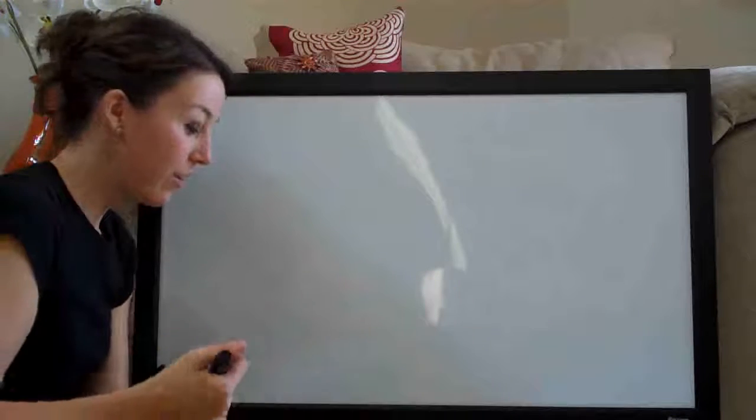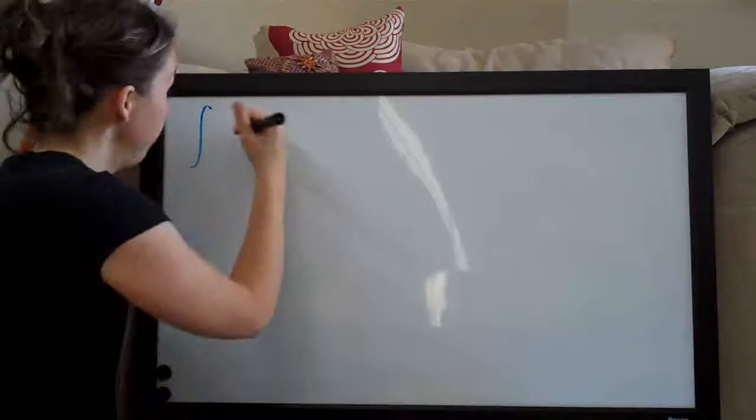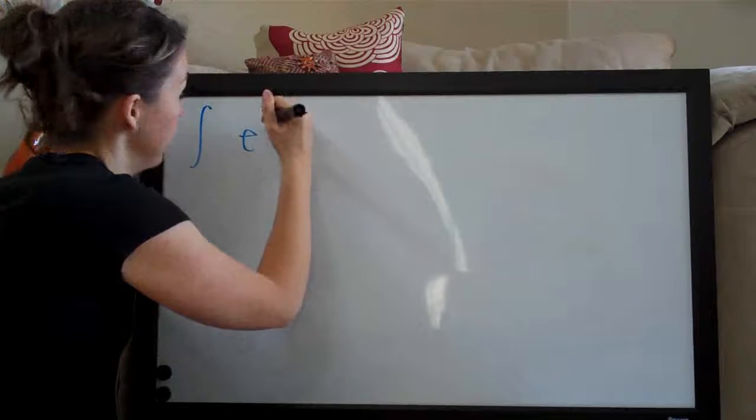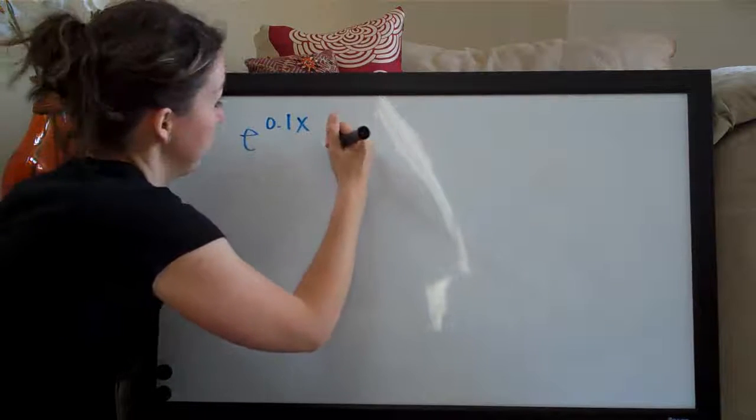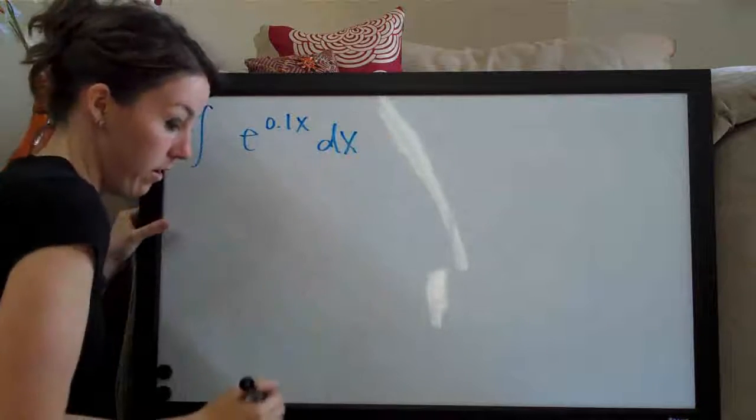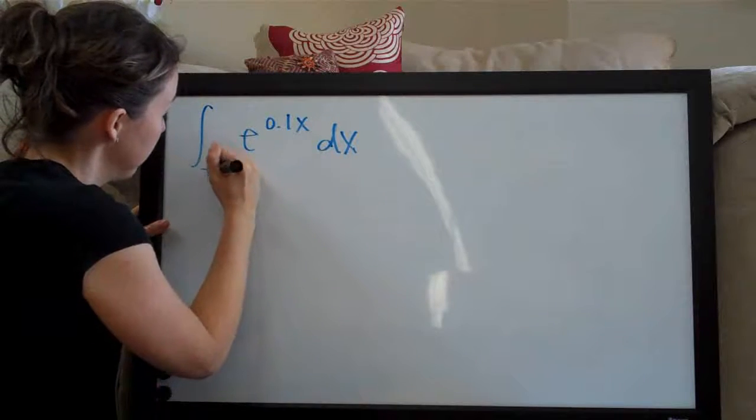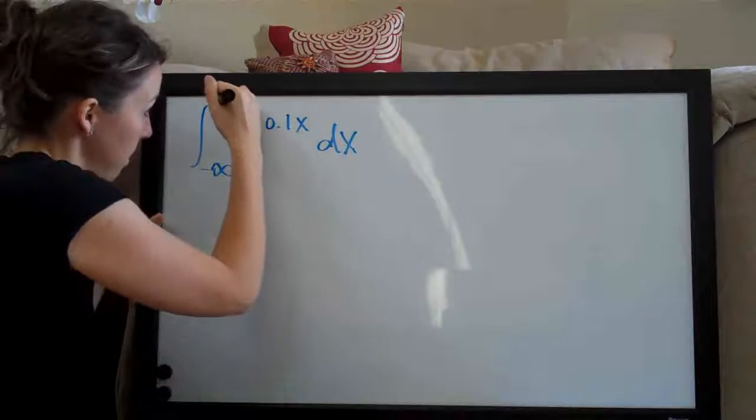Hi everyone! Welcome back. We're going to be doing another improper integral problem. This one is the integral of e to the 0.1x dx on the range negative infinity to 0.